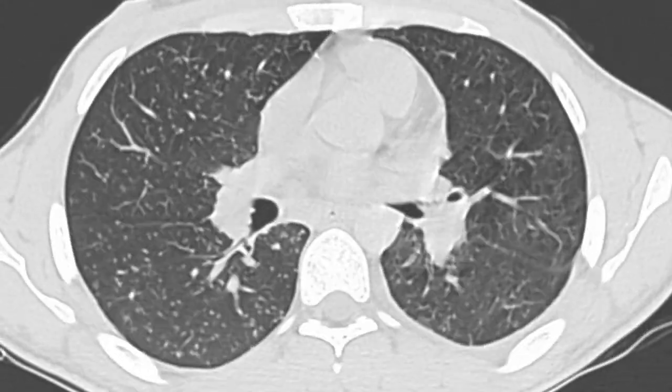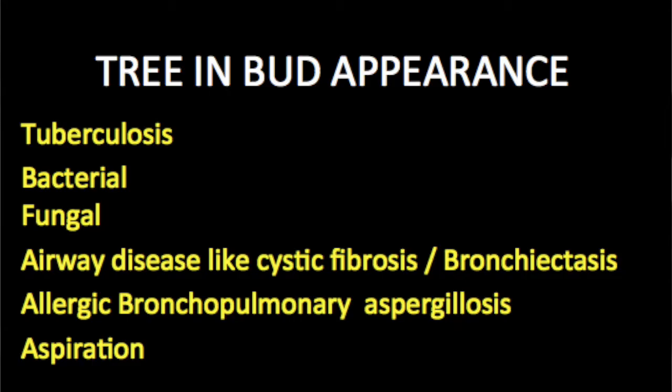We also see here in the right upper zone presence of infiltrates as well as tree-in-bud appearance. Tree-in-bud appearance of course is not classical for tuberculosis — you can see it in a host of other conditions — but in our radiological setting this will fit in with the finding of tuberculosis lesions.